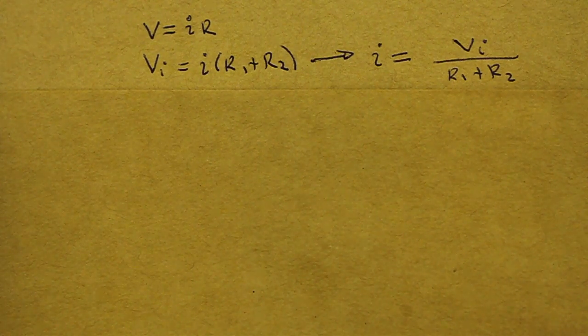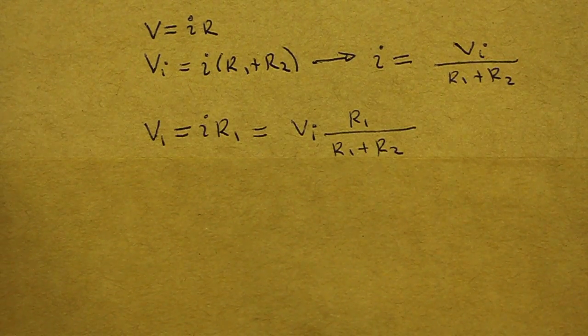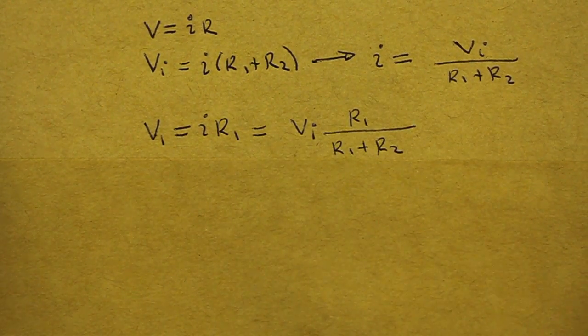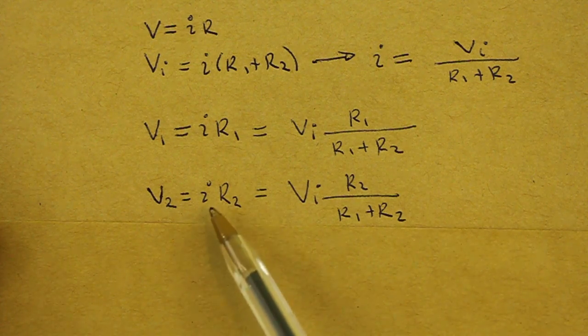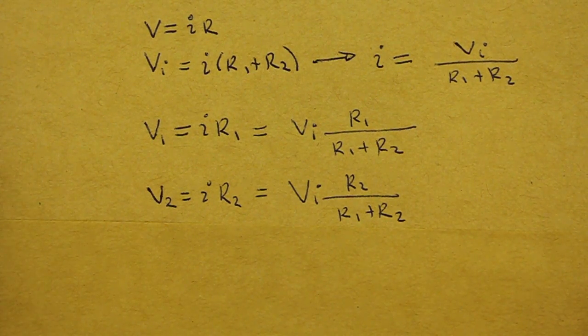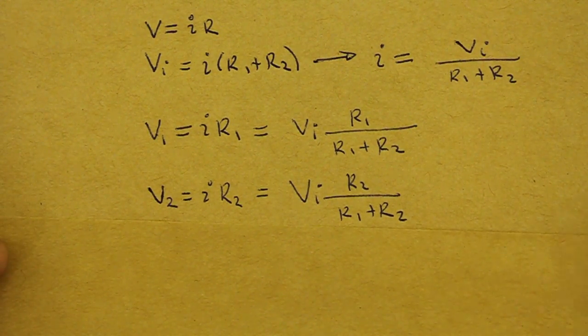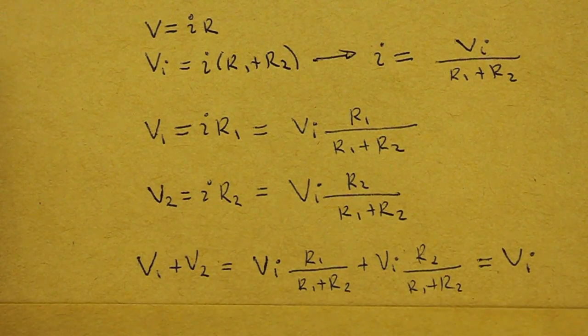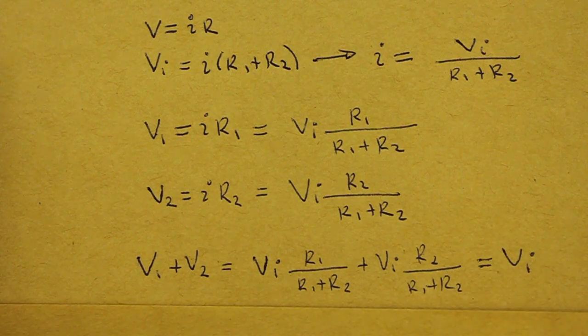Now we can find the voltage at each resistor again using Ohm's law. So voltage 1 in resistor 1 equals current times R1 and we obtain this value, and voltage 2, which is our output voltage from the divider, is current times resistor 2 and we obtain this equation which is what we gave initially. Of course, you can check that the sum of the voltages of the two resistors must be equal to the input voltage. You can do the little math here and verify that V2 plus V1 equals the input voltage.